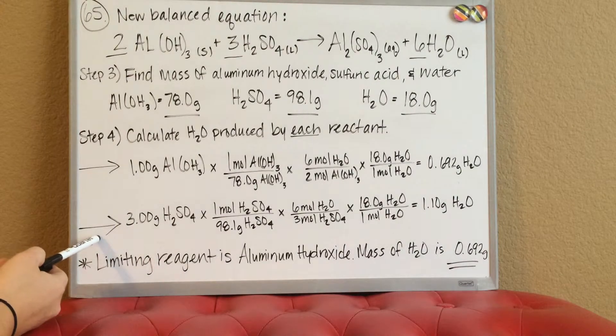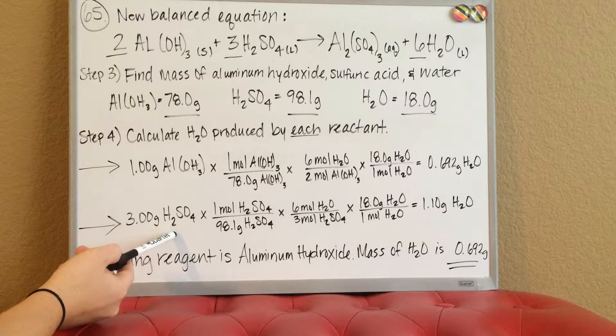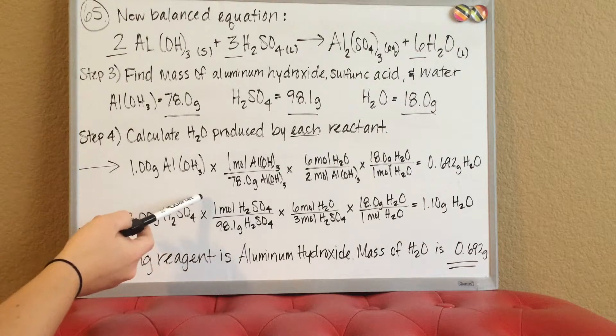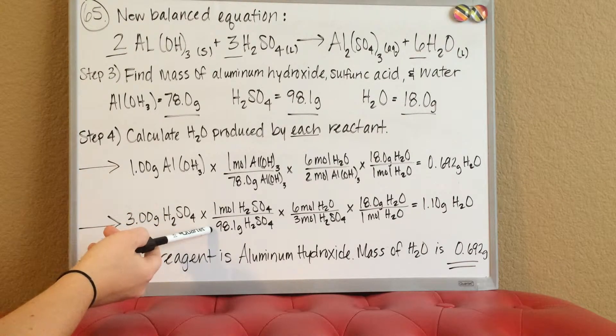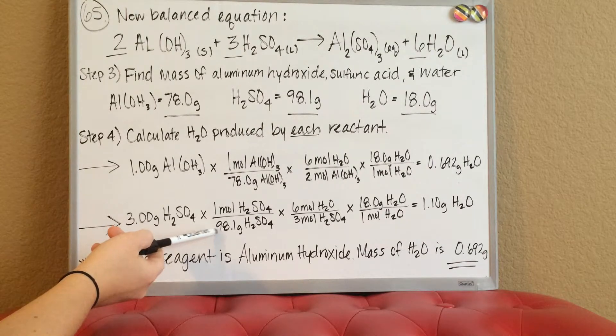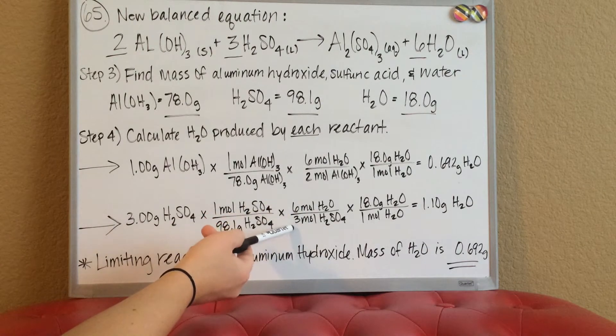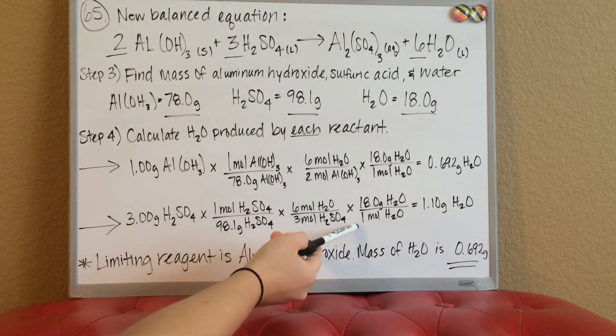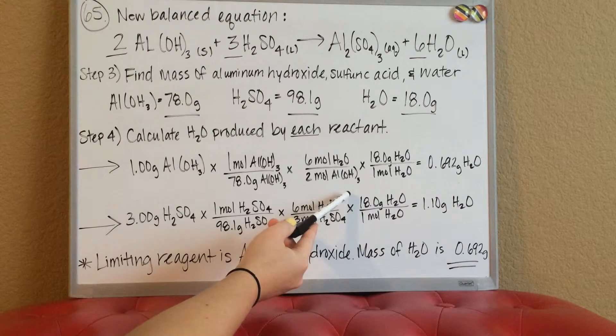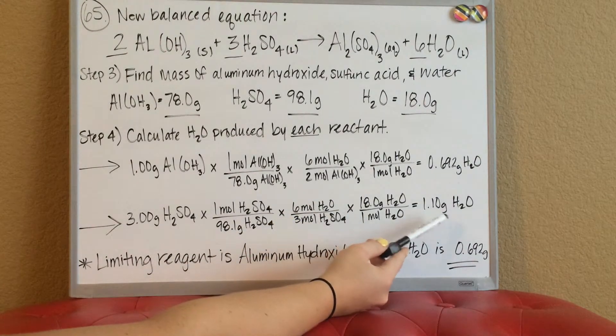Down here I've done the same thing but with three grams of sulfuric acid. I've used the molar mass of sulfuric acid times the mole to mole ratio of H2O and sulfuric acid times the molar mass of H2O to get me 1.10 grams of H2O.